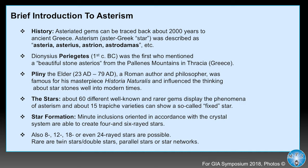Dionysius Periegetes, about one century before Christ, was the first to mention a beautiful stone 'Asterios' from the Palinus mountains in Thresia in Greece. Pliny the Elder, in his famous book Historia Naturalis — 37 different books — was the very famous author writing about stars into the modern era. We now have about 60 different gems that can show a star in epi-asterism and in diasterism, and about 15 trapiche varieties of stars.